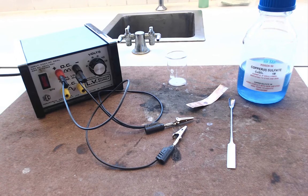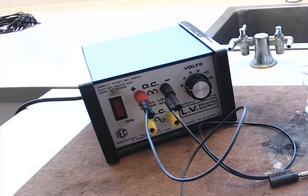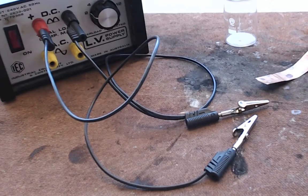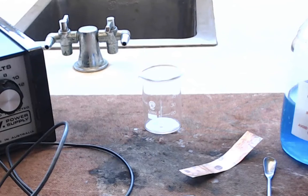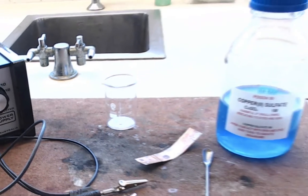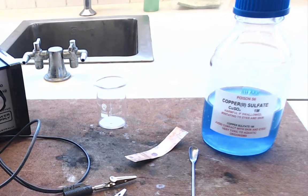Here's the equipment that you need. You've got a power pack, a couple of leads, a couple of crocodile clips on the end of the leads there, a small beaker about 50 millilitres, some copper sulphate. The concentration here is not that important.